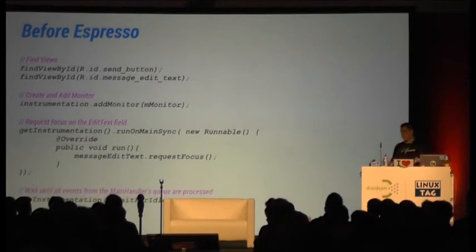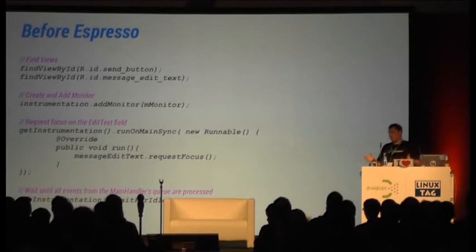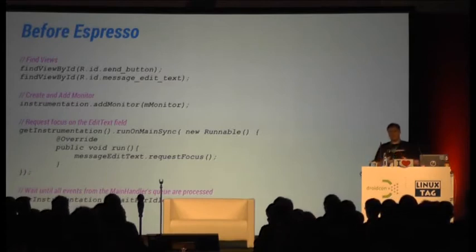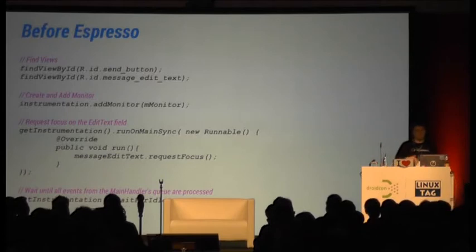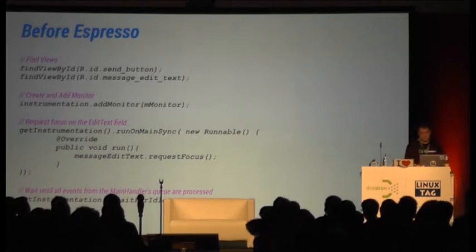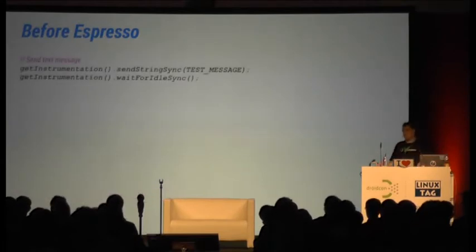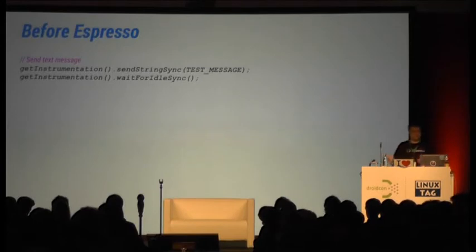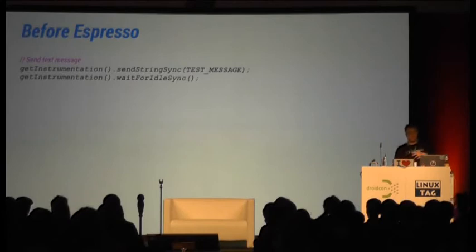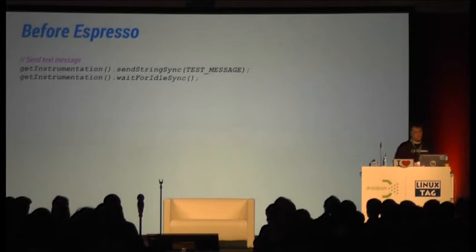After that, you have to call something that waits until the message queue of the handler is empty before you can execute your next step. The next step is to enter some text — you send a string to the test. Again, after that you have to wait. Sometimes it's not obvious whether you have to use the handler or not, and that's why you often end up using it even in cases where you don't actually need it.